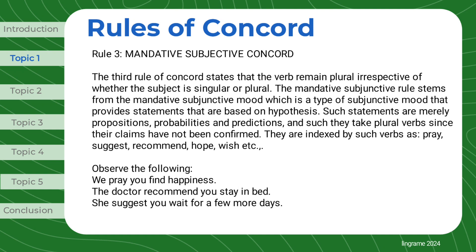Rule 3: Mandative Subjunctive Concord. The third rule of Concord states that the verb remains plural irrespective of whether the subject is singular or plural. The Mandative Subjunctive rule stems from the Mandative Subjunctive mood, which is a type of subjunctive mood that provides statements based on hypothesis. Such statements are merely propositions, probabilities, and predictions, and as such they take plural verbs since their claims have not been confirmed. They are indexed by such verbs as: pray, suggest, recommend, hope, wish, etc.